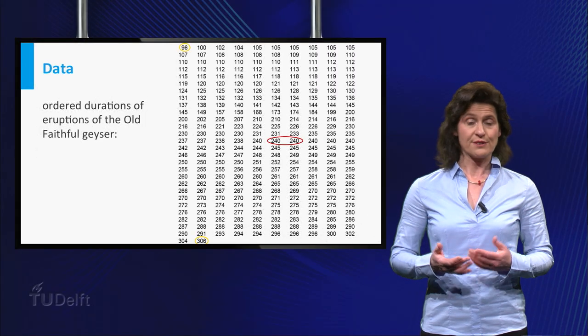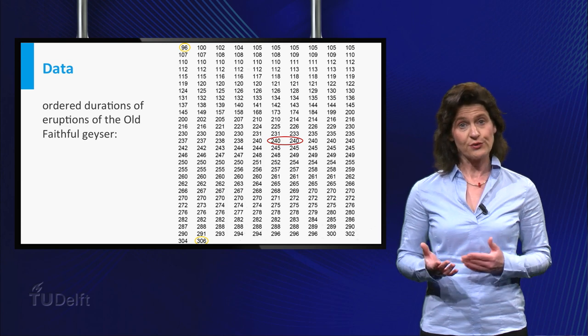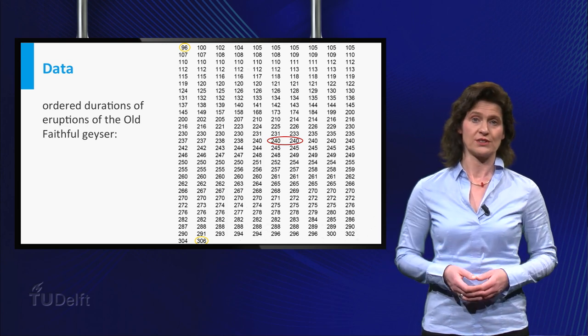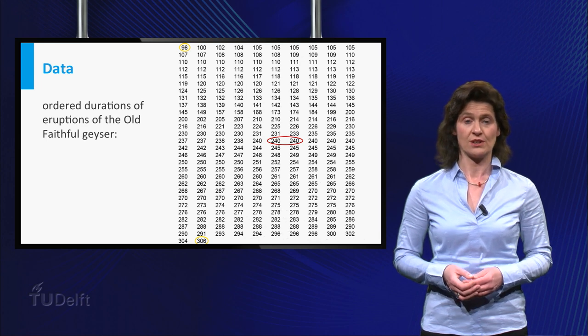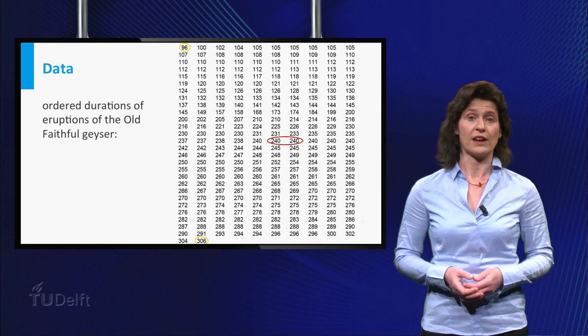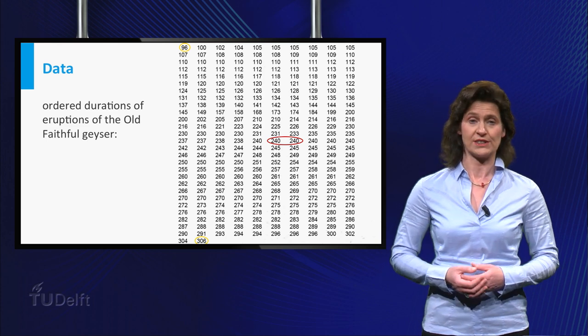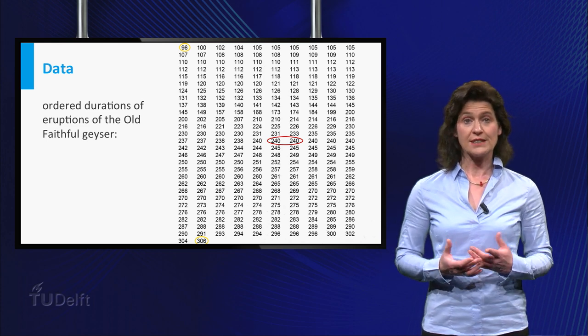Then there is the fact that geological experts believe that two different kinds of eruptions occur: longer ones and shorter ones, both with typical durations. So around these typical values you would expect some higher concentration of observed durations. What are these typical values?